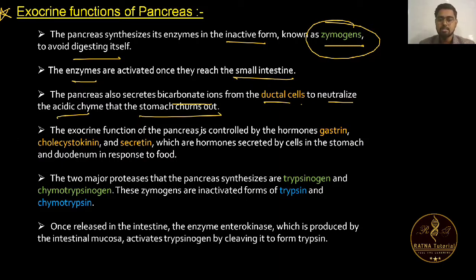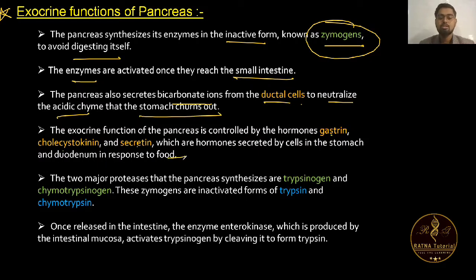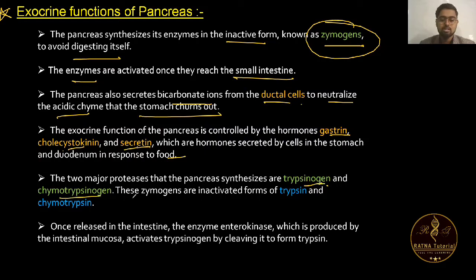The exocrine function of the pancreas is controlled by hormones gastrin, cholecystokinin, and secretin, which are secreted by cells in the stomach and duodenum in response to food. The two major proteases synthesized are trypsinogen and chymotrypsinogen.